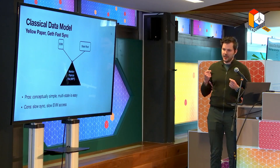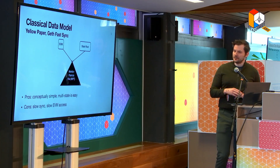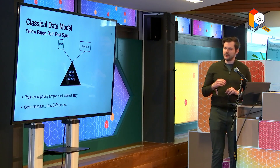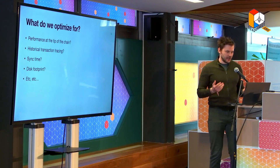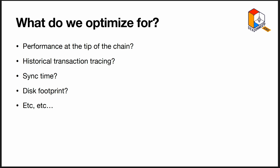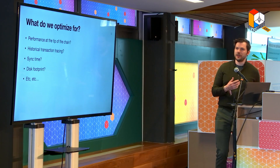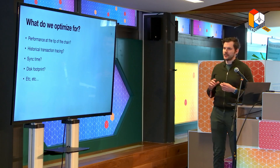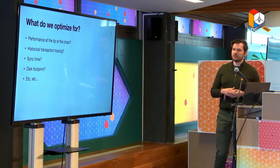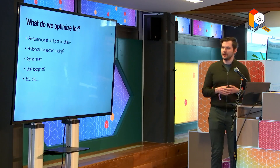There are some technical issues — you could only download a limited number of nodes — but the main reason is that you are downloading a lot of derivative data. When you start thinking about speed and performance, it's a multi-factor thing and you have to think about what you are optimizing for: performance at the tip of the chain, building a full archive node, historical transaction tracing, sync time, disk footprint, and so on. We want to optimize for everything, but sometimes you have to make trade-offs.